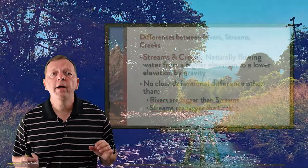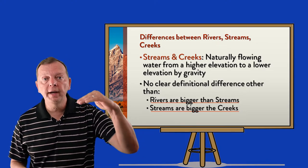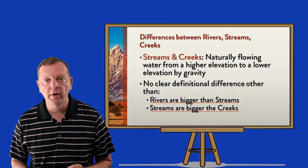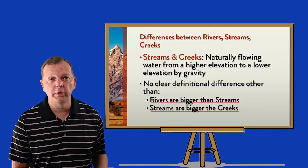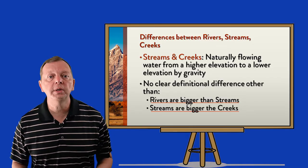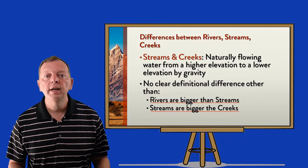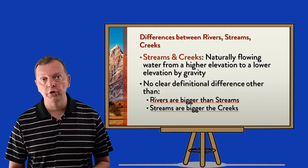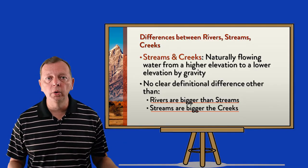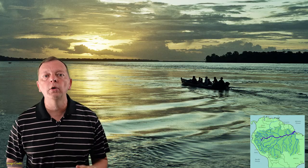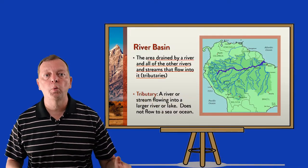Streams and creeks are also water naturally flowing from a higher elevation to a lower elevation due to gravity, but in different sizes. Streams are smaller than rivers and creeks are smaller than streams. Just as with the definitions of hills and mountains, there is no hard and fast definition for each size. Rivers can be huge — the Amazon River in South America is not only the longest in the Western Hemisphere but the widest in the world. In its wet season it can swell to over 25 miles wide, more than twice the Mississippi's widest section of 11 miles across.